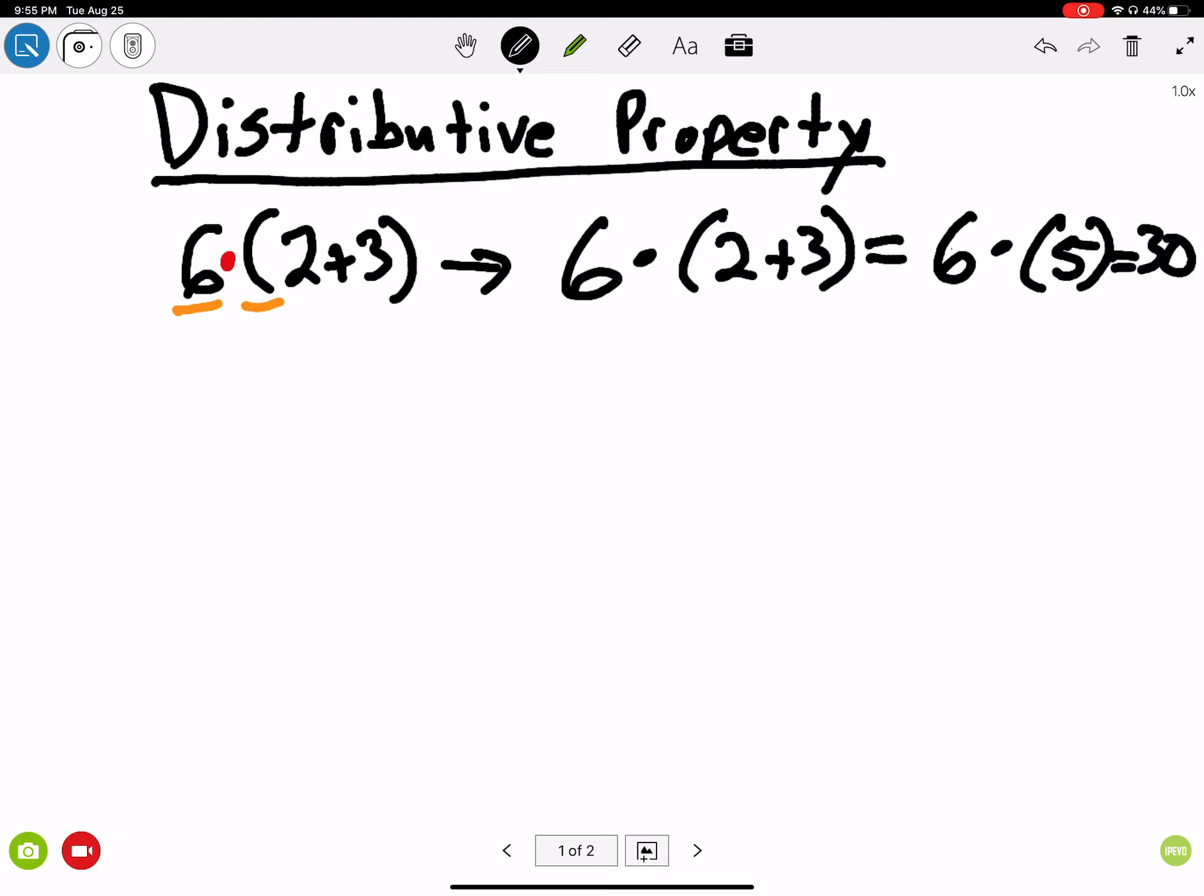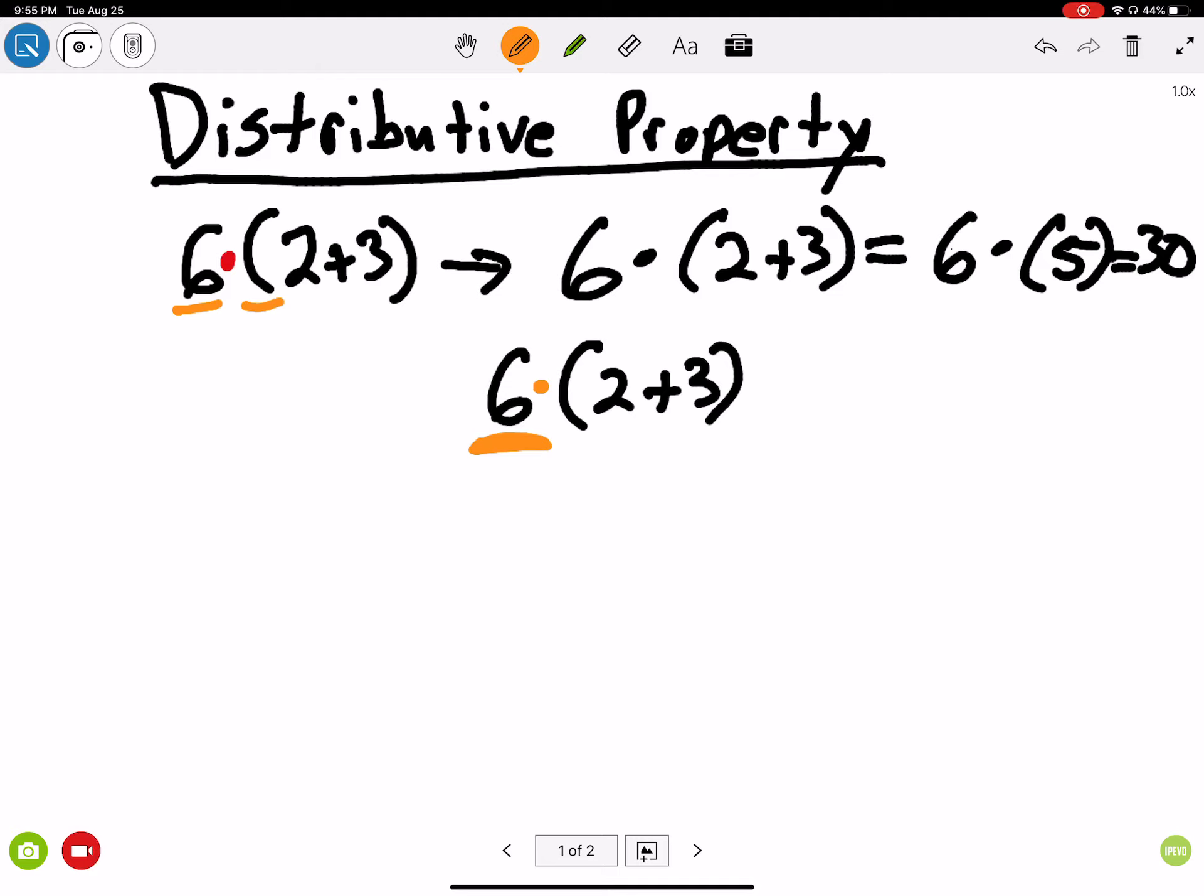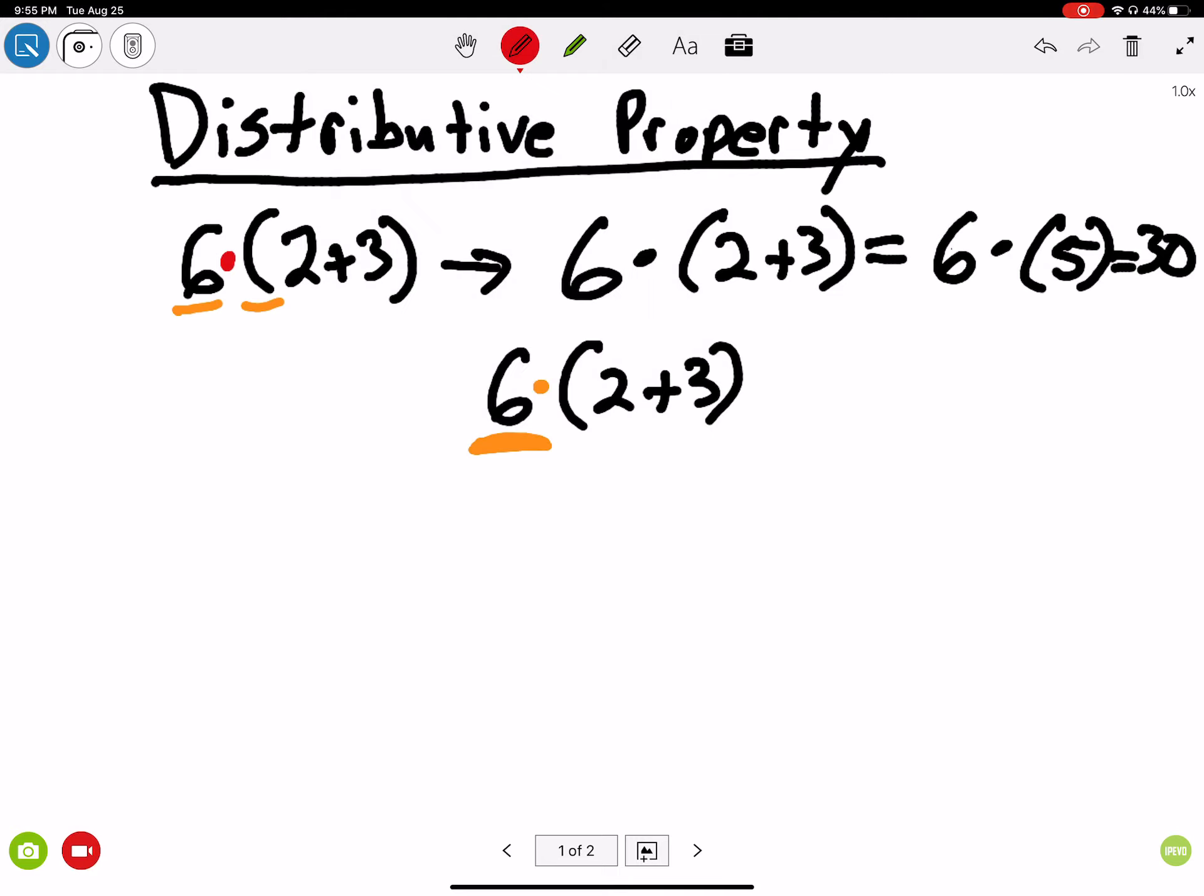Another way of solving this is if I have 6 times 2 plus 3 is using the actual distributive property. Now, what the distributive property says is, whatever the number is outside of parentheses that you're multiplying by, remember, this is only for multiplication. If I have a number here that I'm multiplying by, and then I have parentheses, I can take the number outside of the parentheses and distribute it. That's why it's called distributive property. I can distribute it to each of the terms inside of parentheses.